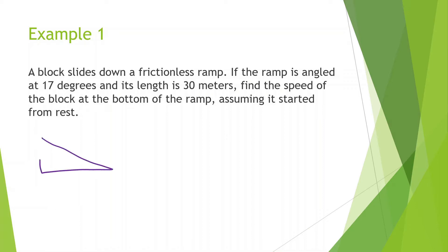So let's just draw this ramp quickly — 17 degrees. We have a block here, and we know that the ramp has a length of 30 meters. So we want to know how fast it's going at the bottom. Before we can find that, we need to figure out what the height is of this box at the very beginning. So I'm going to do 30 times sine of 17, and I get 8.77 meters.